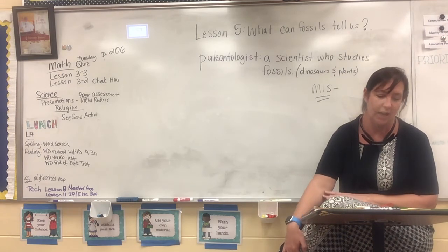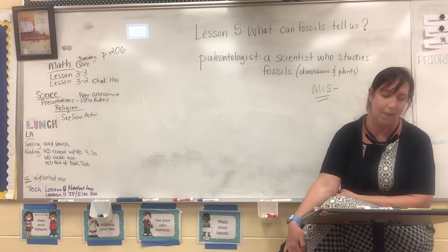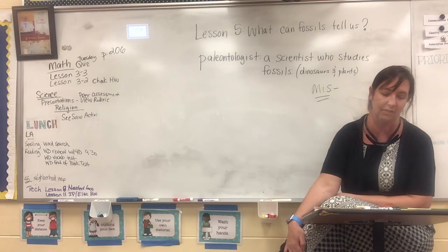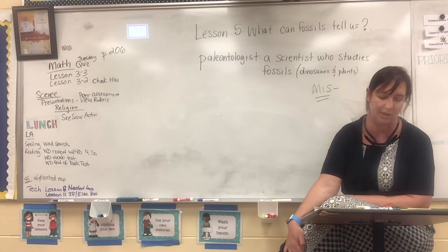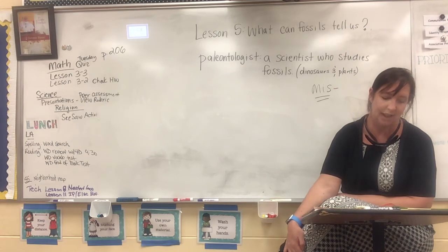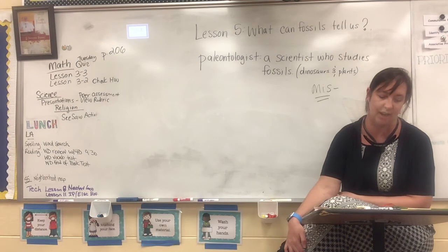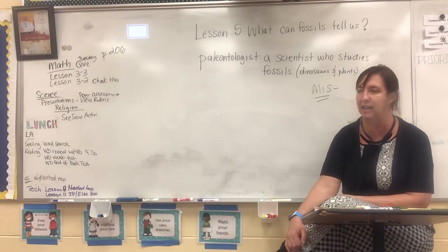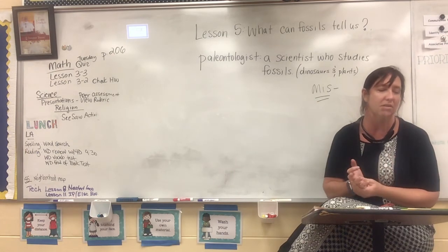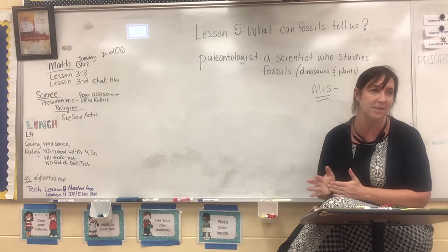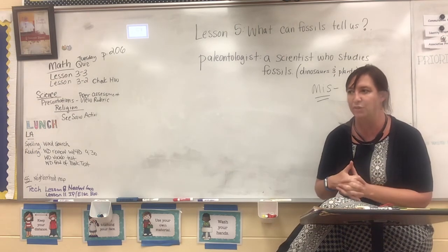Fossils can also show how plants and animals have changed over time. Many living things today are related to plants and animals of the past. Fossils show that some extinct plant species looked a lot like modern plants. For example, compare the horsetail fossil and the modern horsetail plant on the bottom of page 208. Some horsetail plants of the past grew to the size of trees, while modern horsetail plants are much smaller. This suggests that plants changed slowly over time — they got smaller over time.